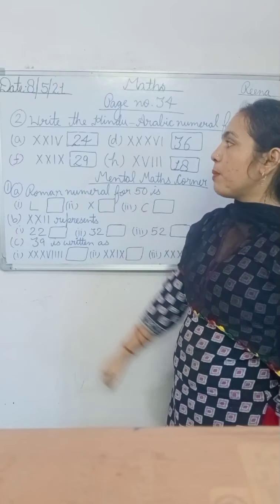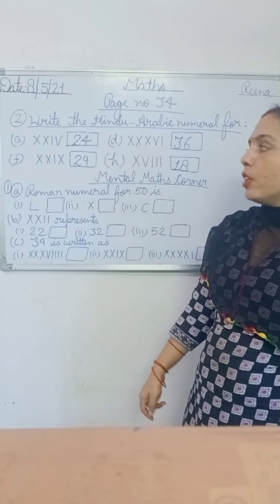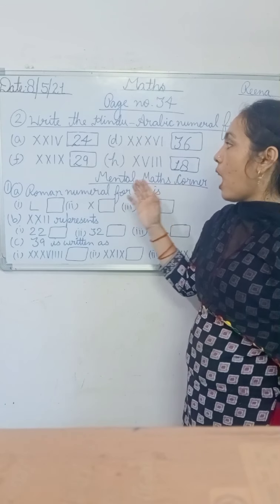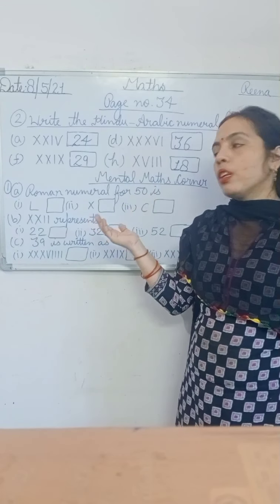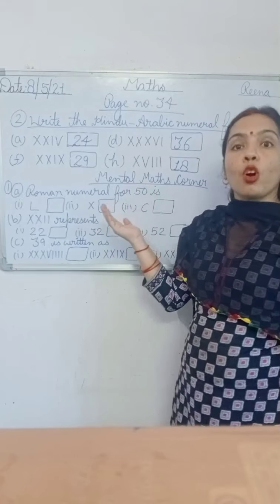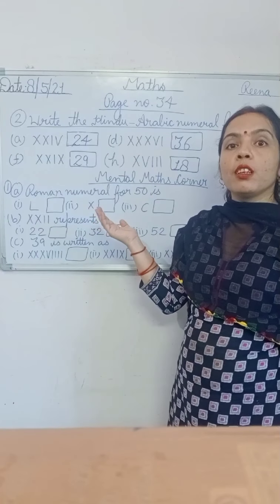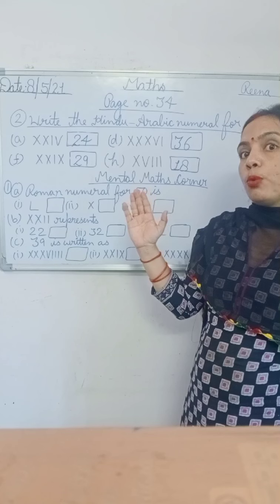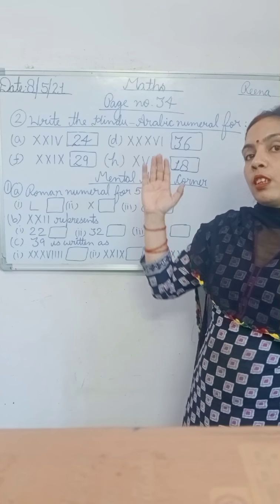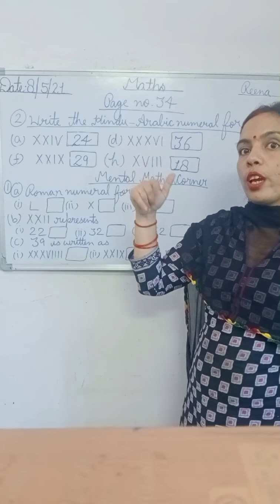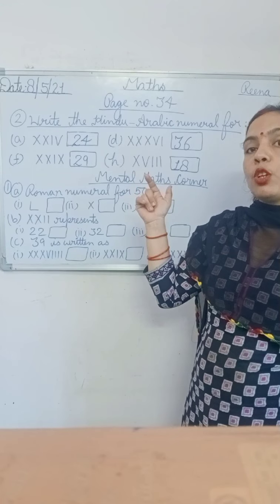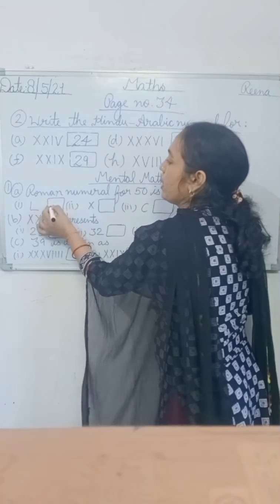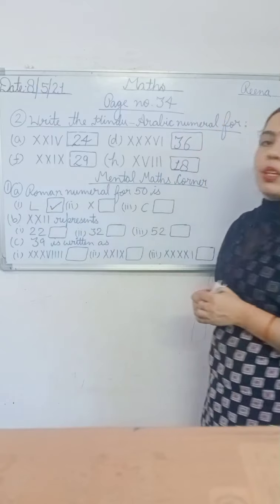Now the first question says tick the correct option. Part A: the Roman numeral for 50 is — how do you write 50 in Roman numeral? We write 50 in Roman numeral as L. L means 50. That means tick option number 1.